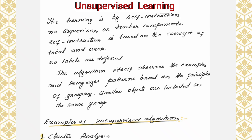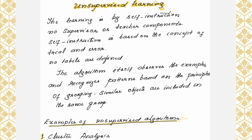Unsupervised learning is classified further into several types, which we will be seeing here in detail. Unsupervised learning is by self-instruction — no supervisor or teacher component is present here.